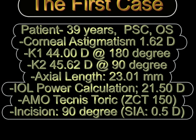This was the first case that we did at our hospital where the Technis Toric IOL was implanted for a 39-year-old patient who was having a posterior subcapsular cataract.